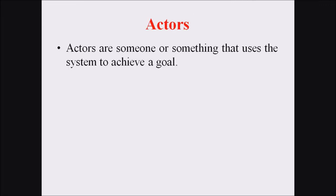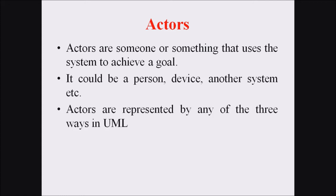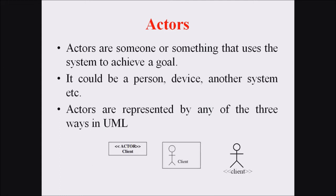Next, the term 'actors'. Actors are someone or something that uses the system to achieve a goal — they are end users or end processors achieving something from a system. Actors can be a person, device, or another system. Actors are represented in three ways in UML: an actor symbol with the actor name at the bottom; a rectangle with the 'actor' tag; or a rectangle with the actor name. The most common representation is the actor symbol with the actor name.